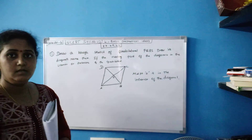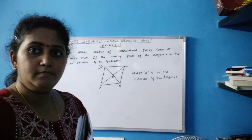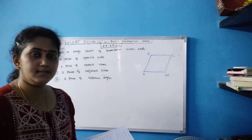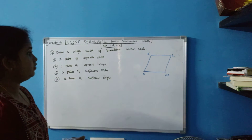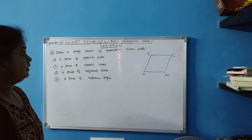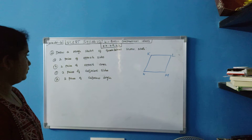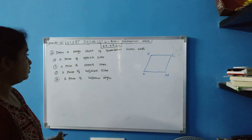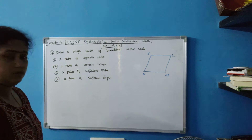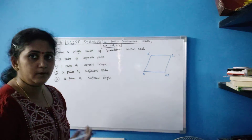This is your answer. Now we will move on to the next sum. Draw a rough sketch of quadrilateral KLMN. State two pairs of opposite sides, two pairs of opposite angles, two pairs of adjacent sides, and two pairs of adjacent angles. So let's see one by one.